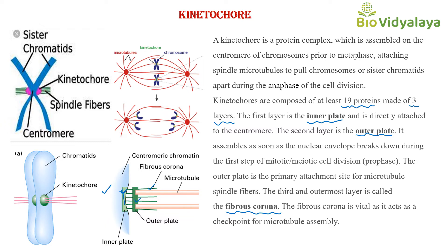The three layers of the kinetochore are the inner plate, the outer plate, and the fibrous corona. The inner plate is directly attached to the centromere region of the chromosome. The second layer, the outer plate, is assembled as soon as the nuclear envelope breaks down during prophase of mitotic cell division. The outer plate is the primary attachment site for microtubule spindle fibers, which you can see attaching to the outer plate in the diagram.